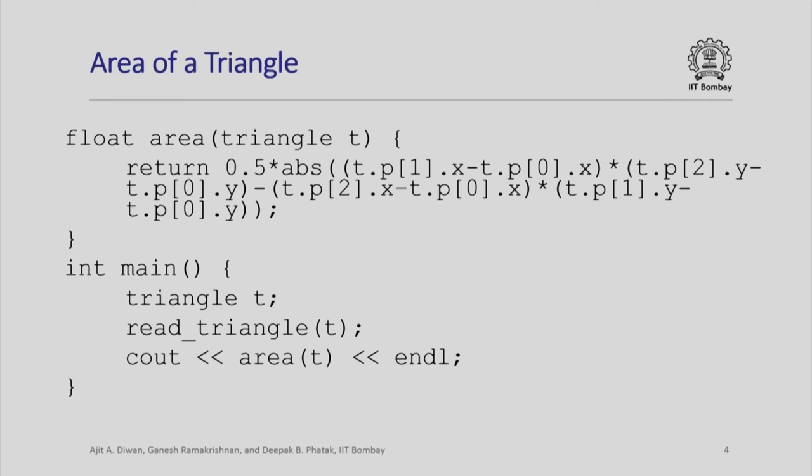Now this is the area function. We need to define how to compute the area of a triangle. From your geometry classes you would know some formulas for computing the area. This just uses the coordinates of the three corner points of the triangle and computes and returns the area. Our main function simply calls the read-triangle function, calls the area function for that triangle, and outputs the area.